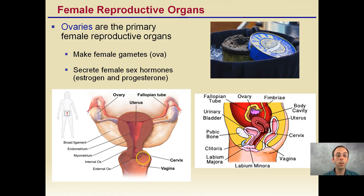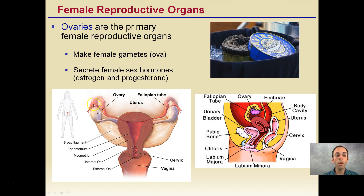Now the female reproductive organs: the ovaries are the primary female reproductive organ, producing female gametes or ova. They secrete the female sex hormones estrogen and progesterone. We can see here the ovary, the fallopian tubes, and the uterus, which are important for fertilization. If you've ever heard the term caviar, this is basically fish eggs — a collection from sturgeon, which is a rare delicacy and very expensive. It's simply a collection of those unfertilized female eggs.